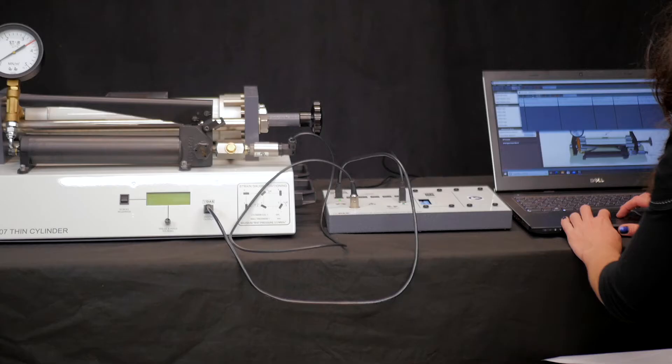The digital display on the front of this unit shows the strain measured by each gauge as a microstrain. A negative reading is a compressive strain and a positive reading is a tensile strain. This data will also be transferred to VDAS as well for automated data logging and data analysis.